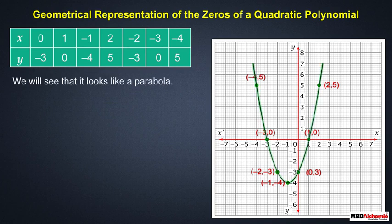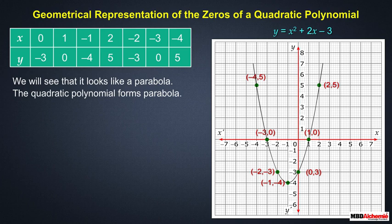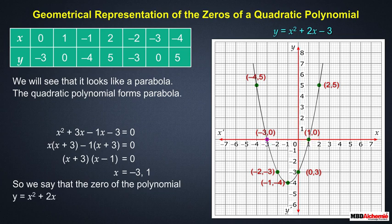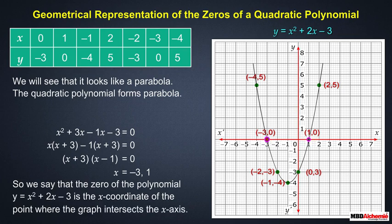We see that the graph forms a parabola — the quadratic polynomial forms a parabola. The graph of y = x² + 2x − 3 intersects the x-axis exactly at (1, 0) and (−3, 0). The zeros of x² + 2x − 3 are −3 and 1. So the zeros of the polynomial are the x-coordinates of the points where the graph intersects the x-axis.